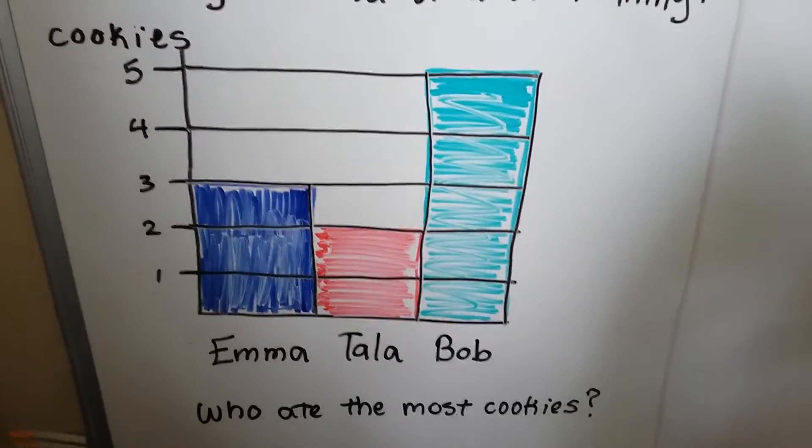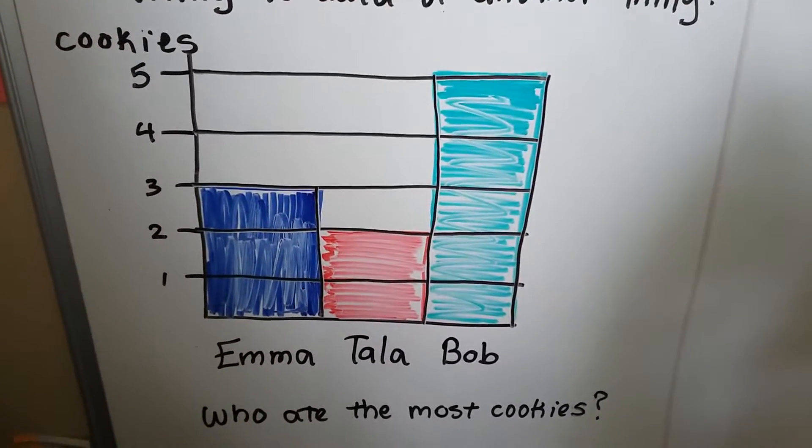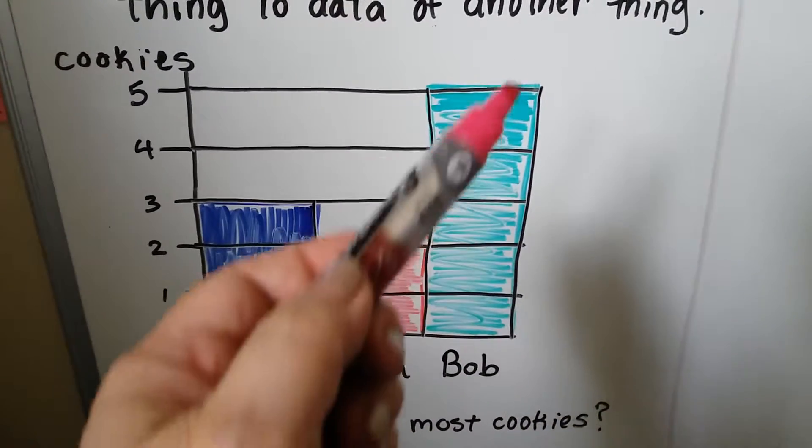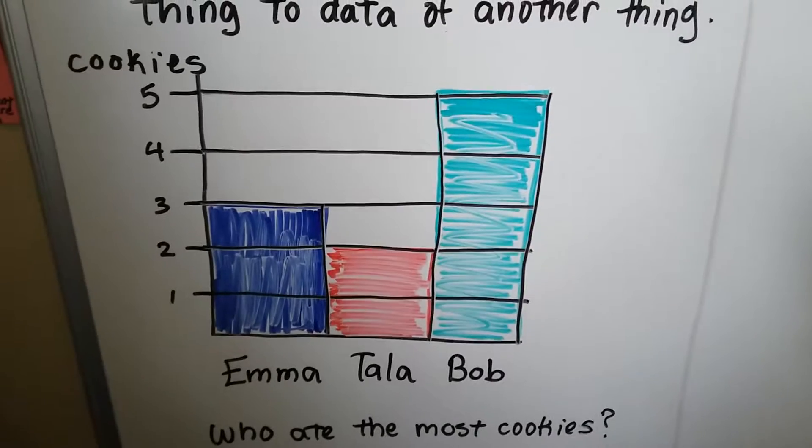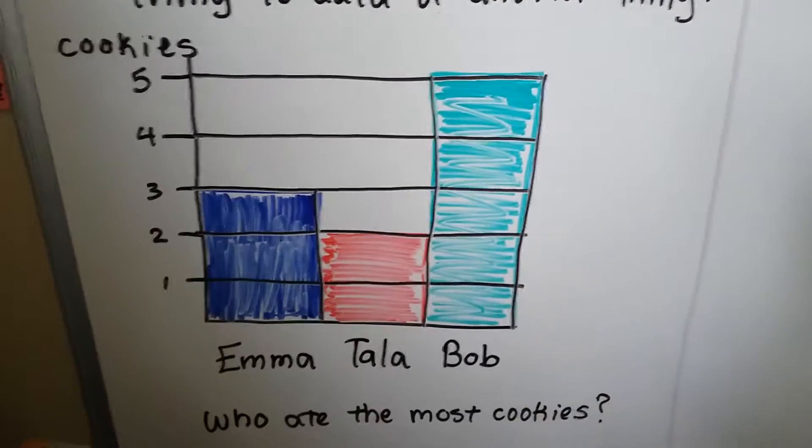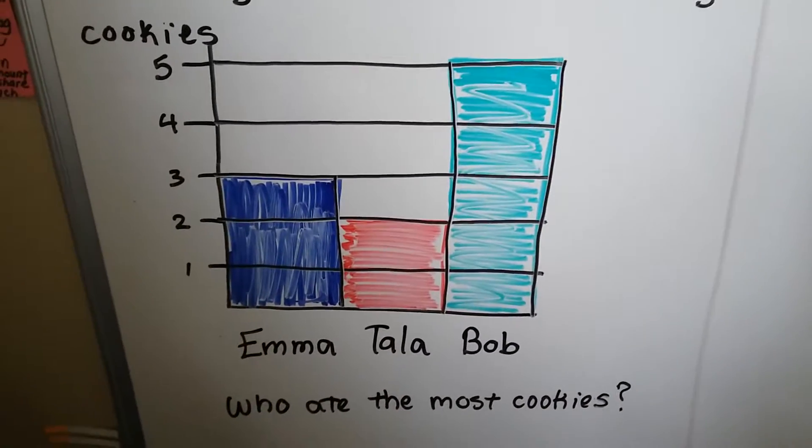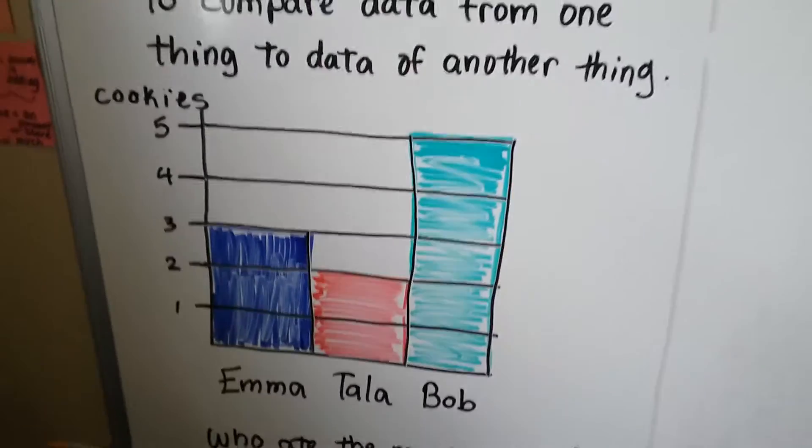So look at this graph here. Just by looking at the graph, can you tell who ate the most cookies? Well, we can see this has got the tallest bar. So Bob ate the most cookies. We can even look at this and say, who ate the least amount of cookies? It was Tala because her bar is the lowest. See? So a bar graph can really help us.